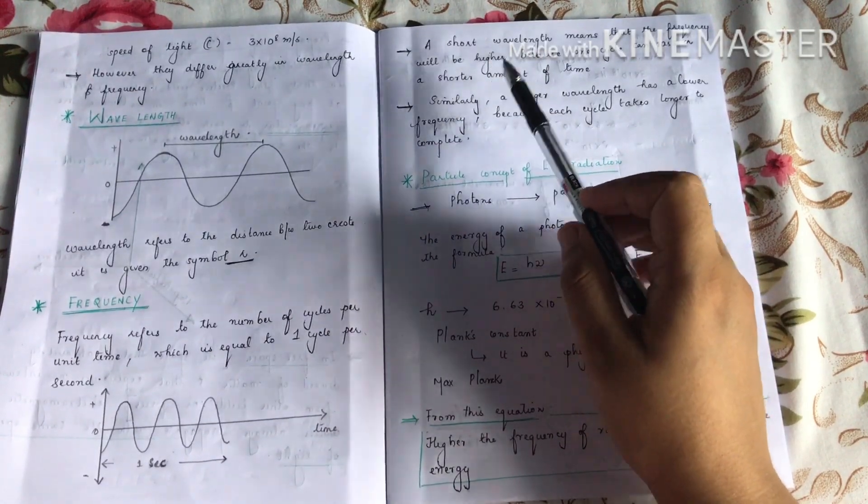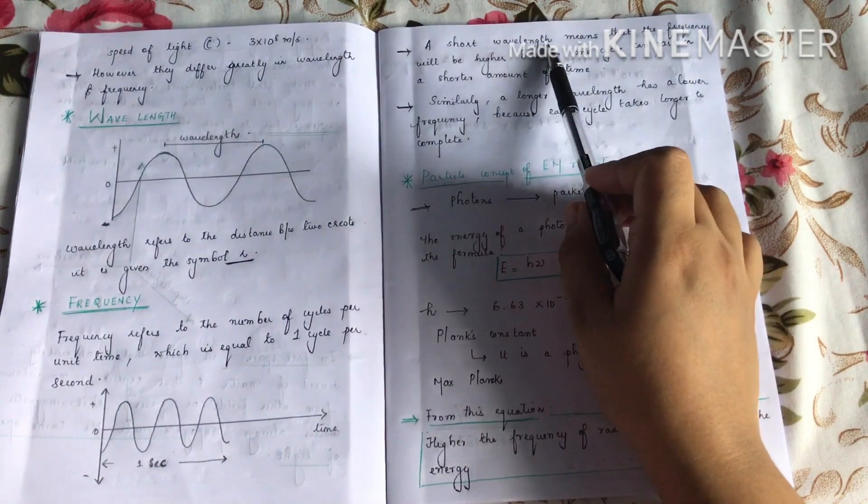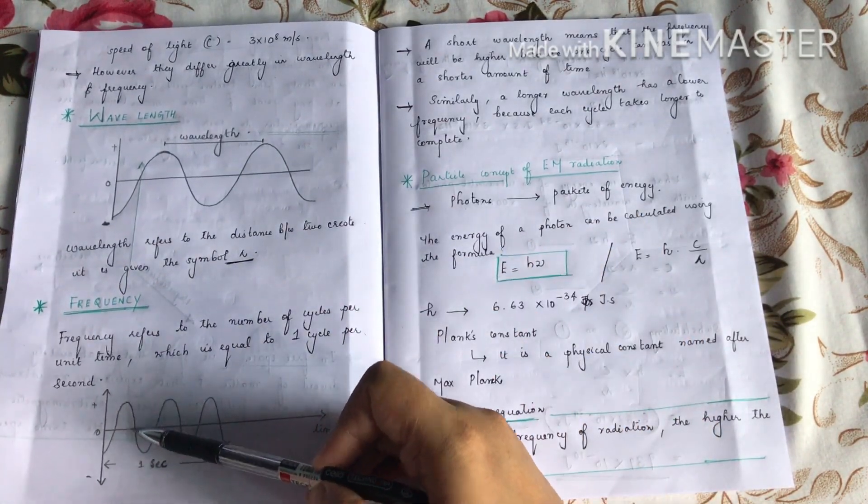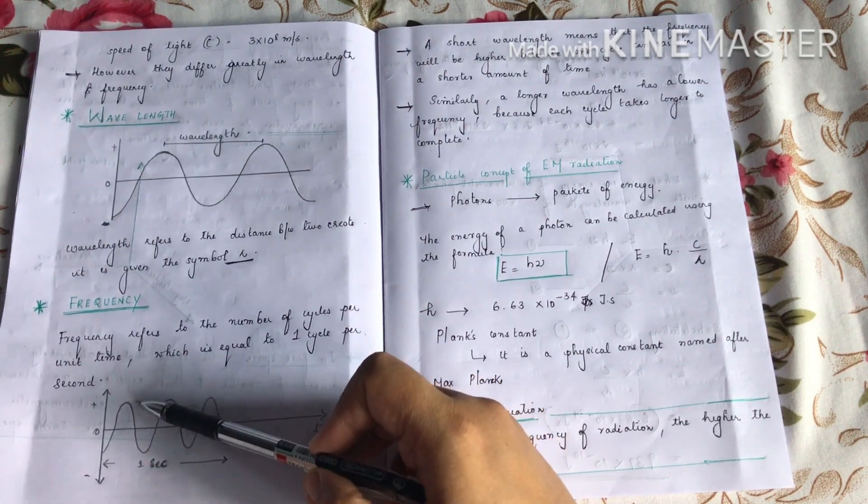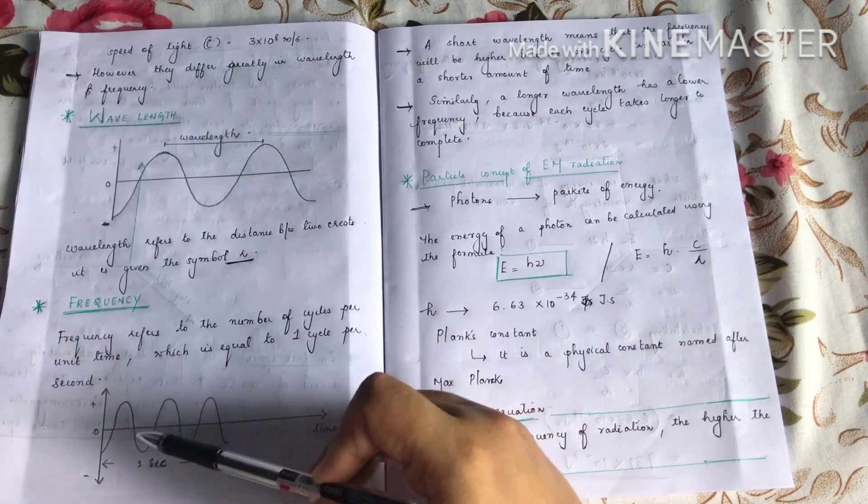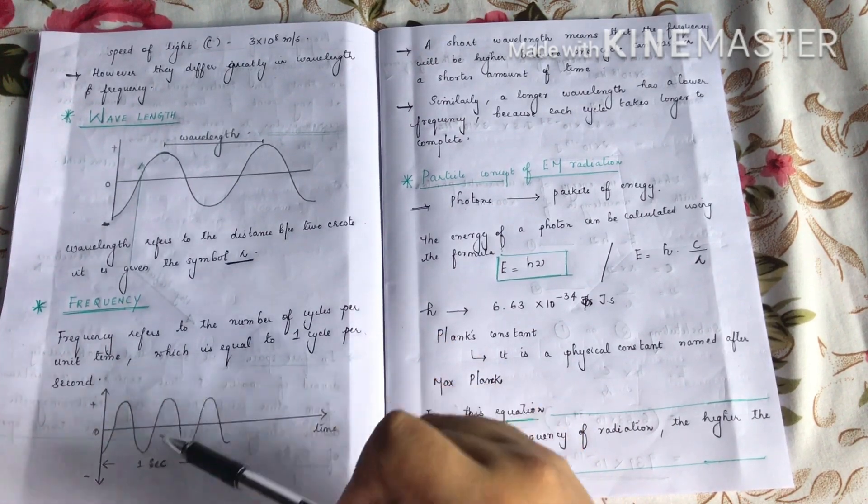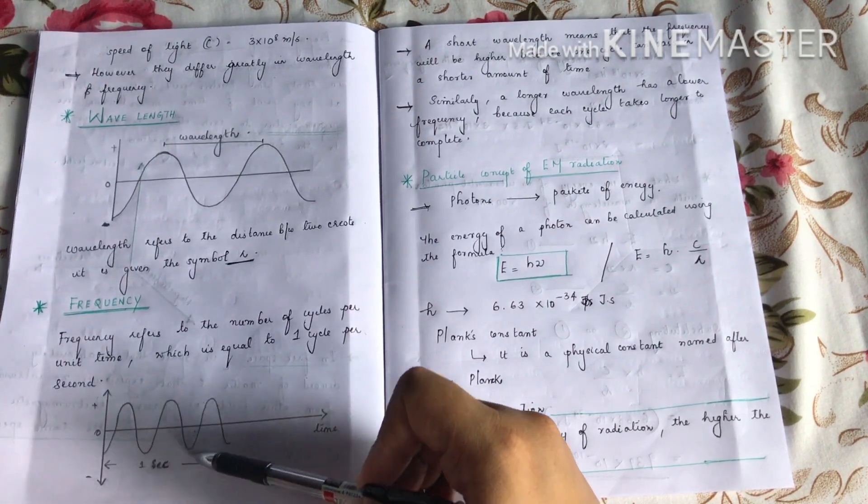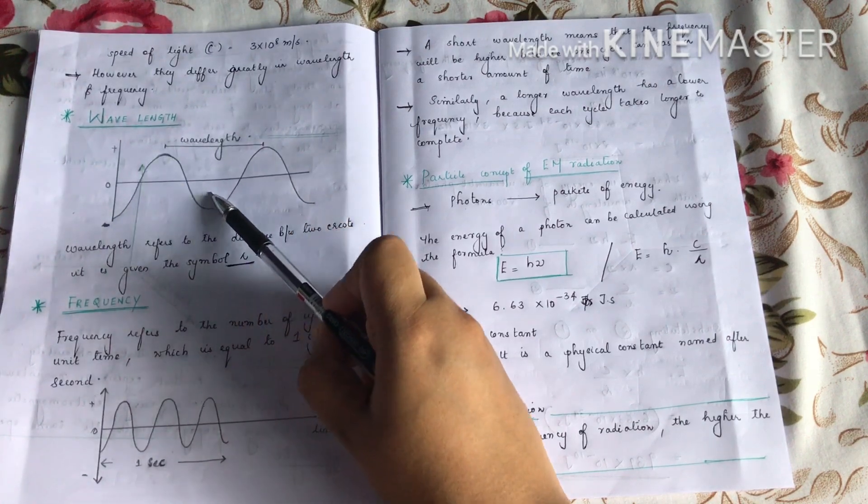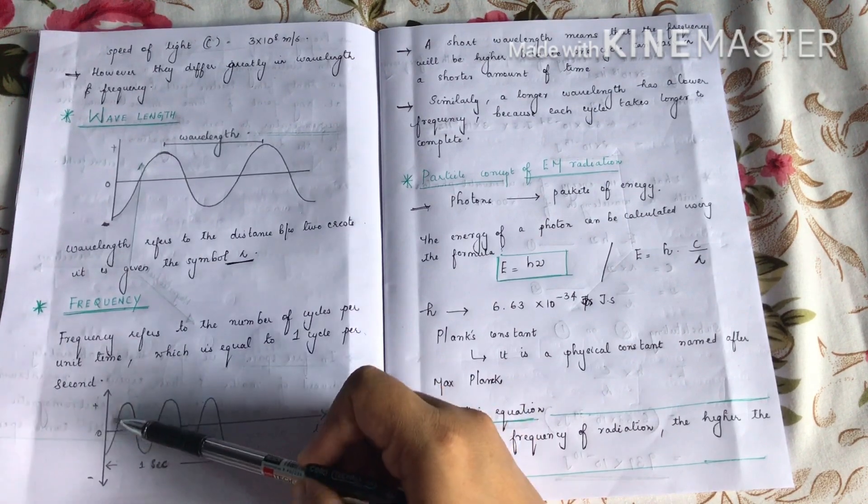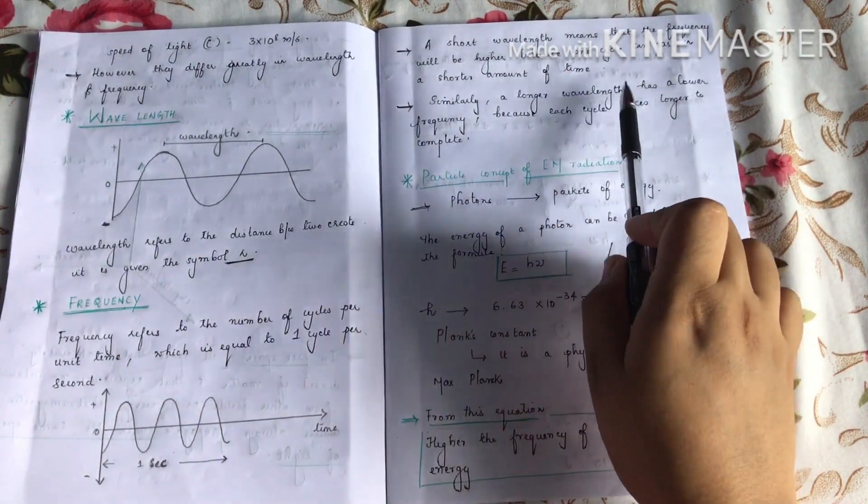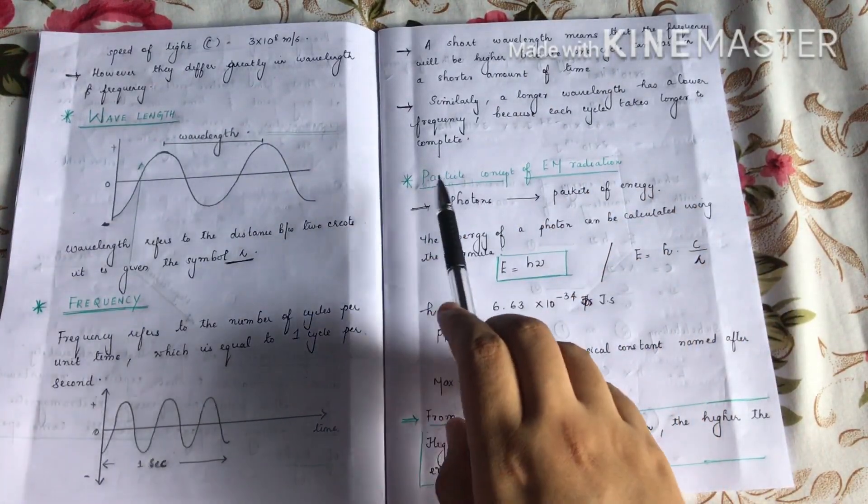A short wavelength electromagnetic radiation has higher frequency than a long wavelength electromagnetic radiation. That is, for short wavelength, the distance between crests is very short, so the frequency will be higher because one cycle can pass in a shorter amount of time. For example, in one second, three waves may pass for short wavelength, but for long wavelength, only one wave may pass in one second. So short wavelength has higher frequency, and long wavelength has lower frequency. That is the wavelength-frequency relationship.